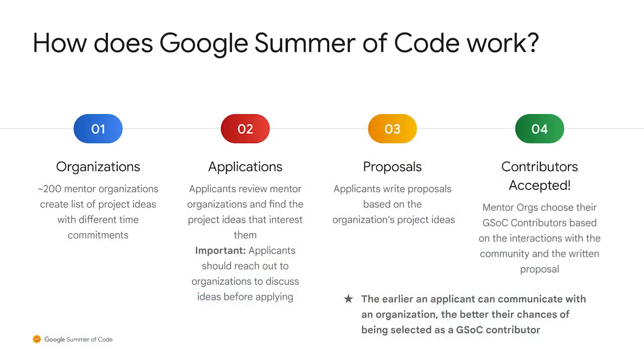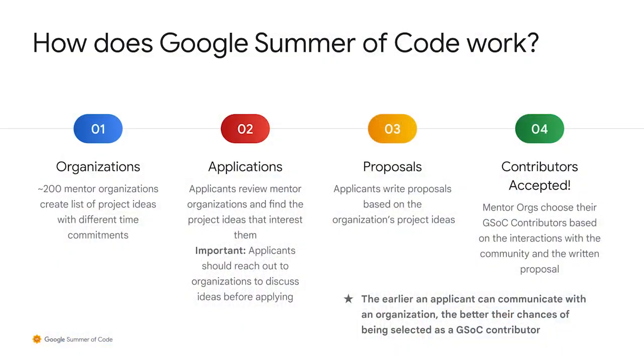Once Google has announced the mentor organizations, potential participants review the accepted organizations and look for project ideas that align with their interests. Applicants are encouraged to reach out to the mentor organizations before applying. This interaction is key to an individual being accepted into the program as a GSOC contributor. Applicants write proposals on the project ideas that interest them, and mentor organizations decide on their top participants by considering the participants' interactions with their community and their written proposals.